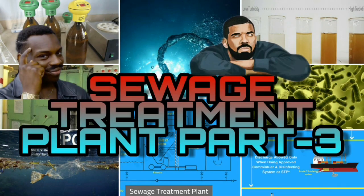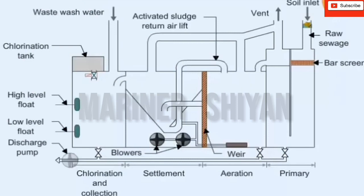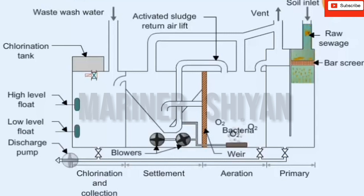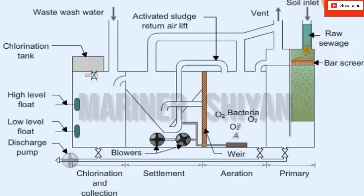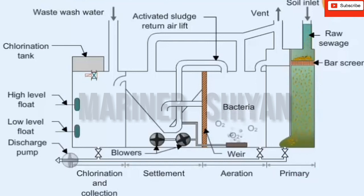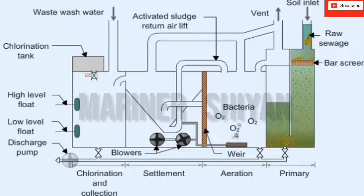The sewage treatment plant has four compartments. Incoming waste passes through a coarse screen into the primary collection tank, where it remains until displaced by overflow into the aeration section. A connection is provided so that the primary collection tank can be pumped out.